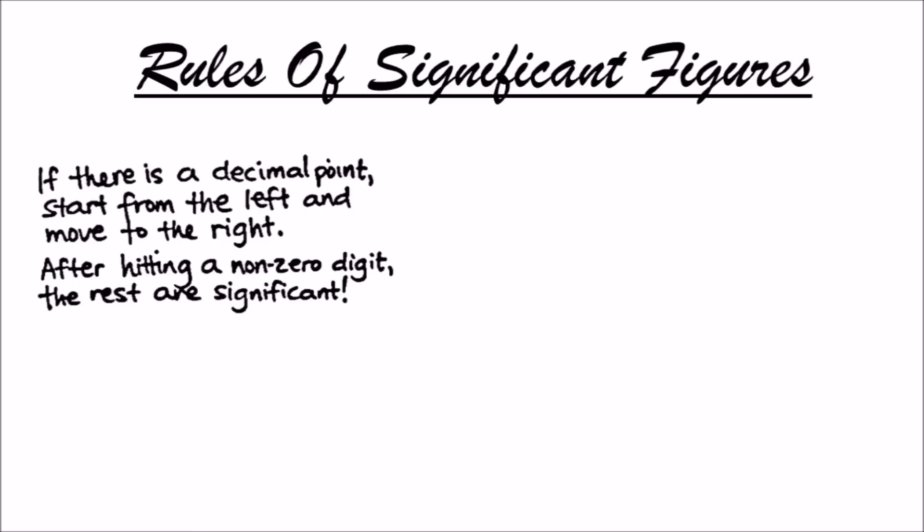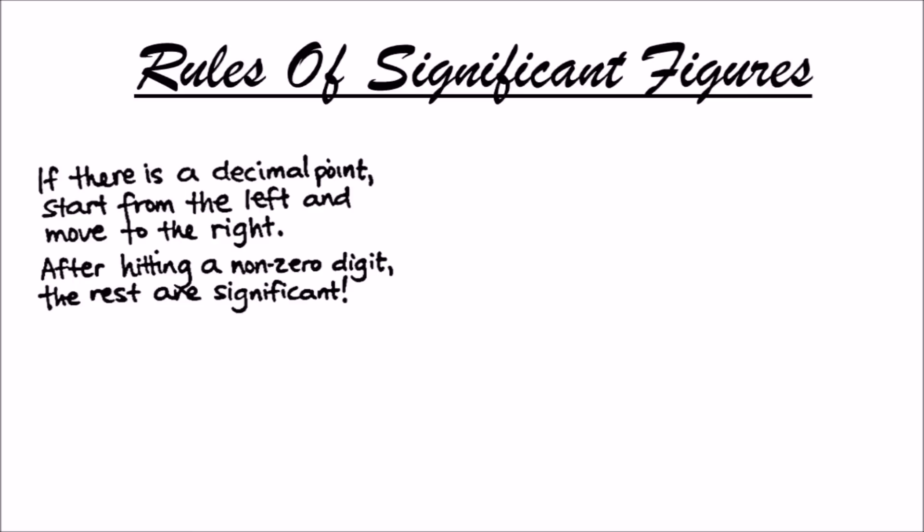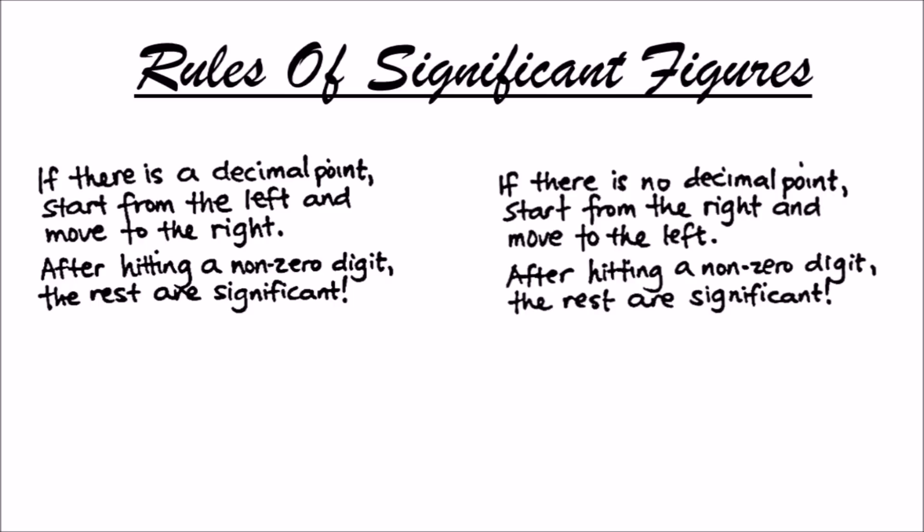So the rules are: if there is a decimal point, start from the left and move to the right — after hitting a non-zero digit, the rest are significant. If there is no decimal point, start from the right and move to the left — after hitting a non-zero digit, the rest are significant.